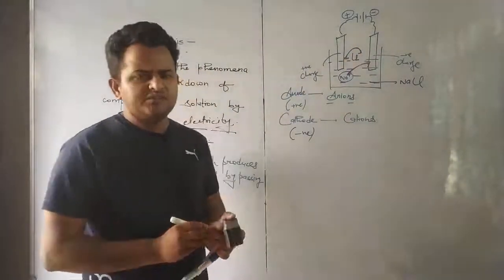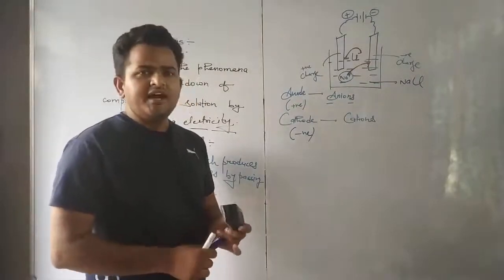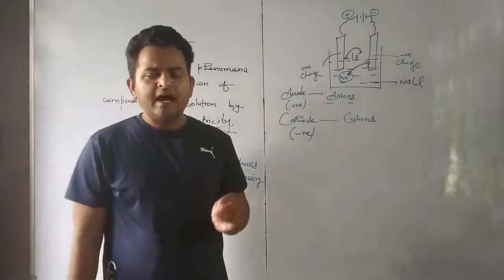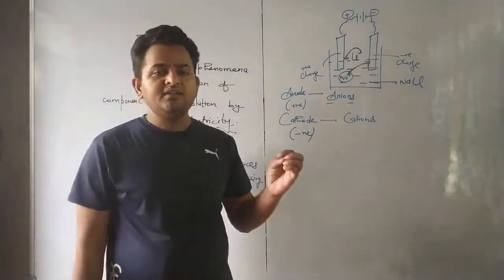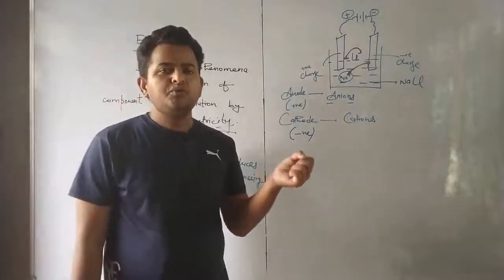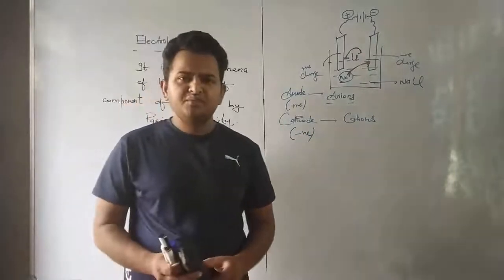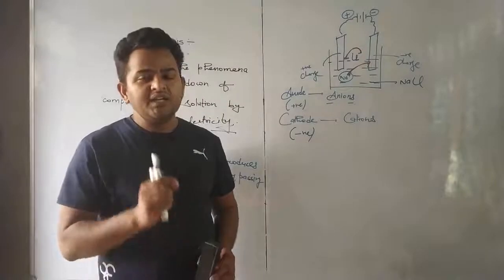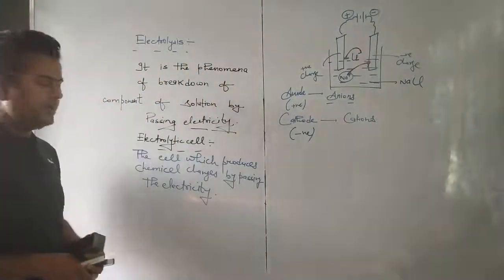Deposition is happening on the electrode, and because of this deposition the electrode increases in mass by some amount. How much amount will increase depends on how much current is passed, so that we can know the amount produced. Faraday did a quantitative study of electrolysis — meaning he studied how much quantity is involved.